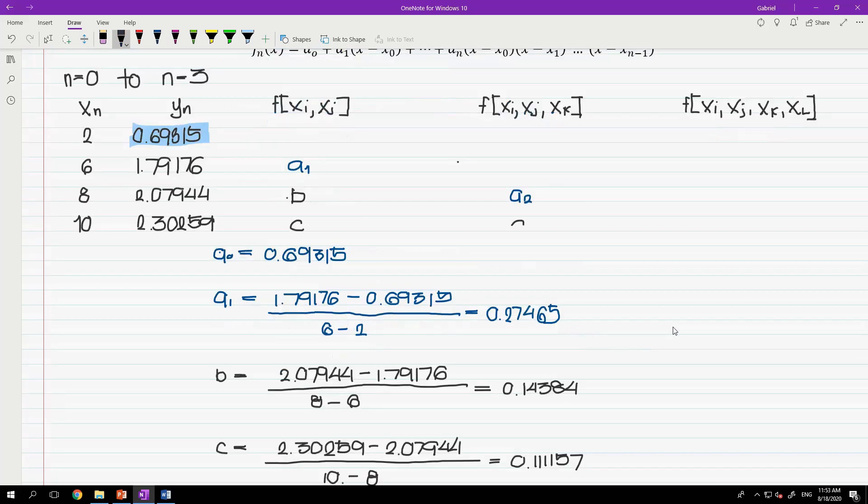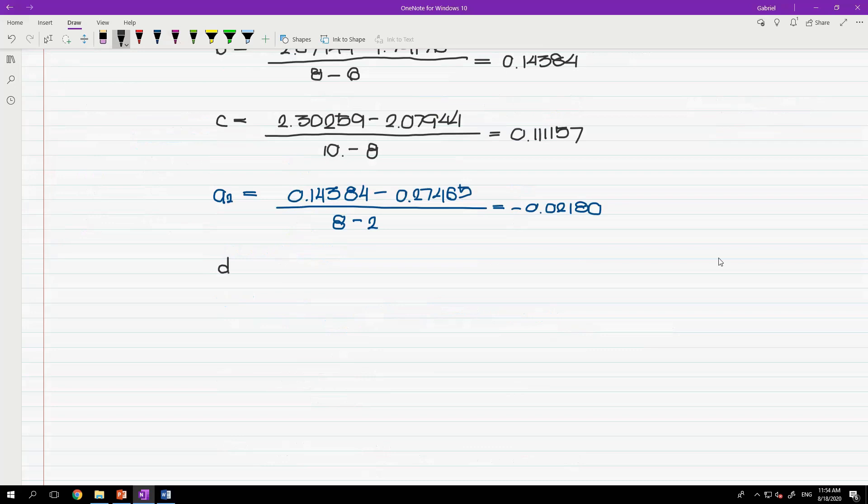Again, naming the other part of the column as variable d. So using the same pattern, d is equals to 0.11157 minus 0.14384 all over 10 minus 6. And that is equals to negative 0.00807.